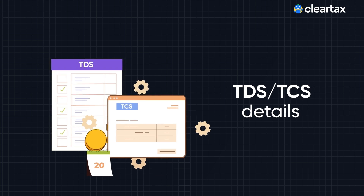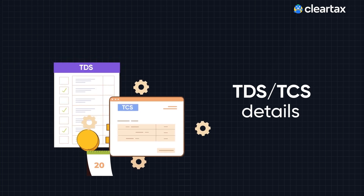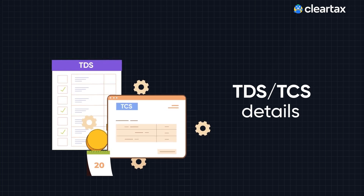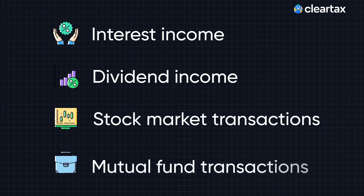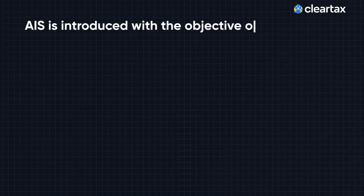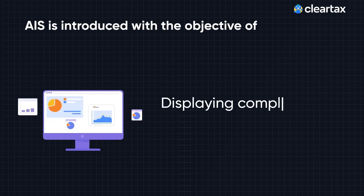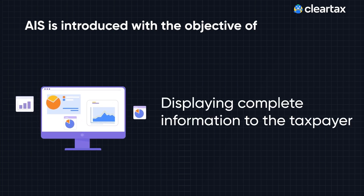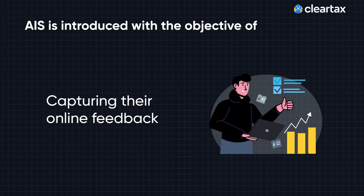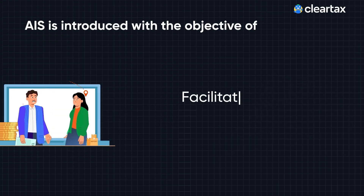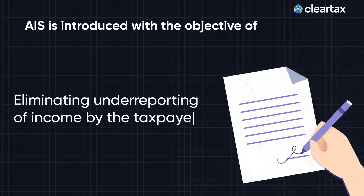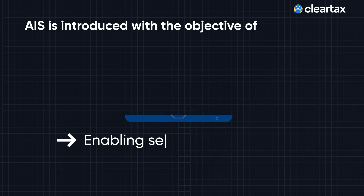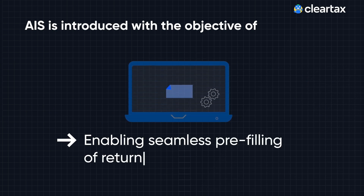In addition to the TDS or TCS details, AIS also shows details like interest, dividend, stock market transactions, mutual fund transactions, etc. AIS is introduced with the objective of displaying complete information to the taxpayer and capturing their online feedback, facilitating voluntary compliance and eliminating the underreporting of income by the taxpayers and enabling seamless pre-filing of return.